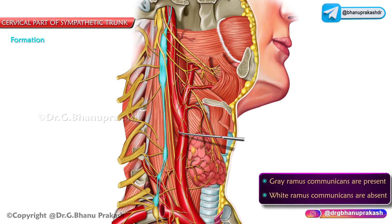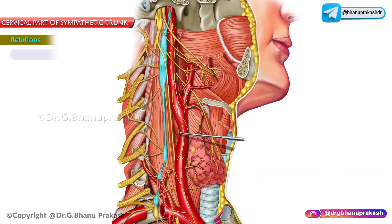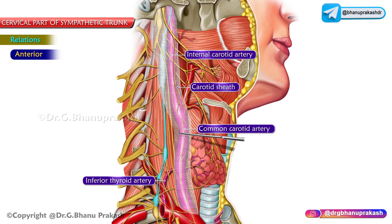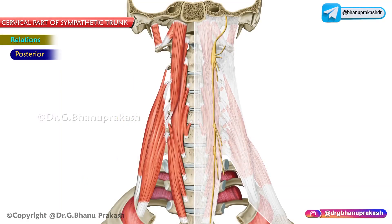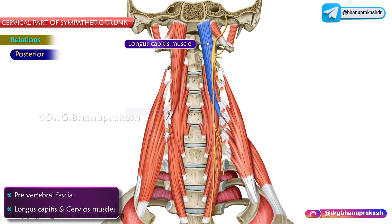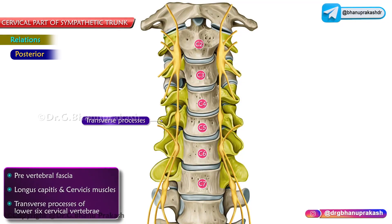The anterior relations include the internal carotid artery, the common carotid artery, the carotid sheath, and the inferior thyroid artery. The posterior relations are the pre-vertebral fascia, longus capitis and cervical muscles, and the transverse processes of the lower six cervical vertebrae.